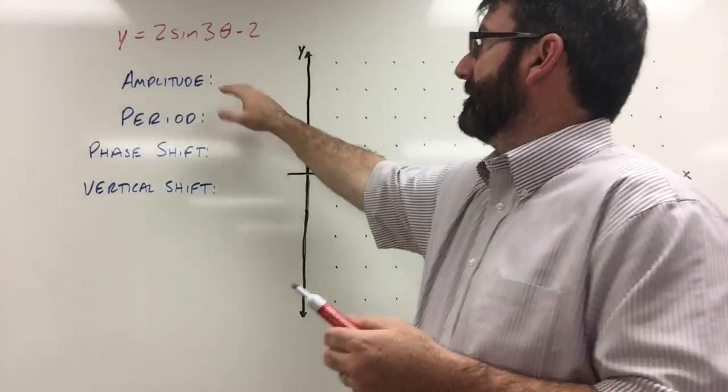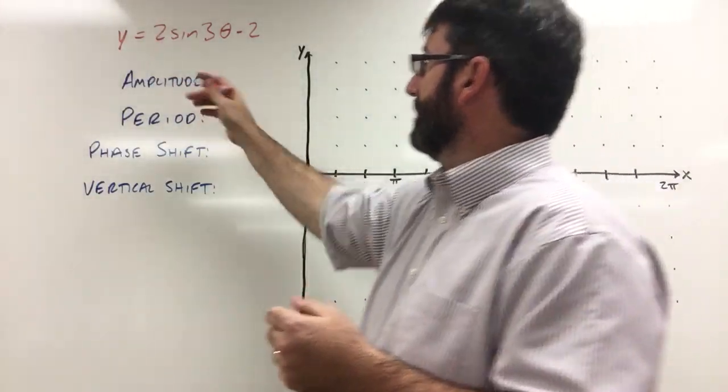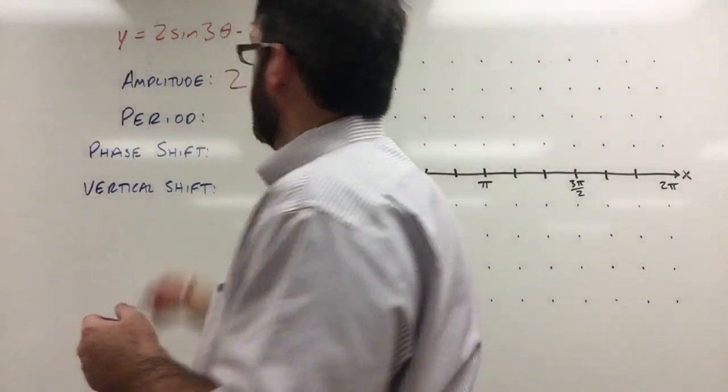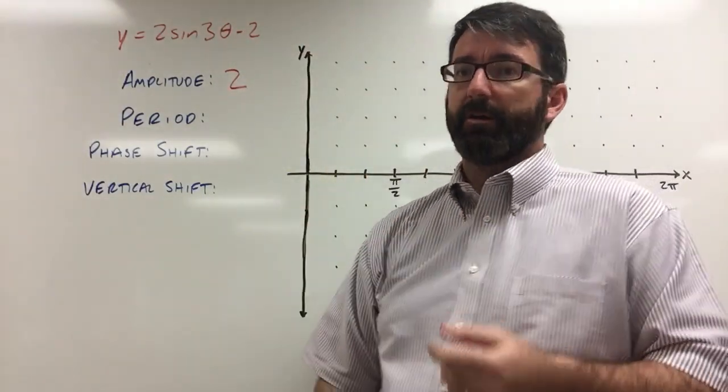So the amplitude is always going to be the coefficient in front of the sine. And so here our amplitude is going to be 2. That means we're going to go up 2 from the midline and down 2 from the midline.